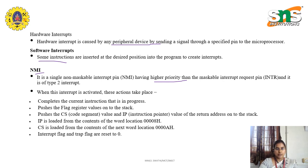The non-maskable interrupt is of two types. Whenever the non-maskable interrupt is activated, the following steps are performed: first of all, it completes the current instruction that is in progress. Next, it pushes the flag register values onto the stack. And next, it pushes the code segment (CS) value, as we discussed in the architecture, and the IP — that is, the instruction pointer — value of the return address onto the stack.